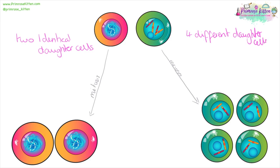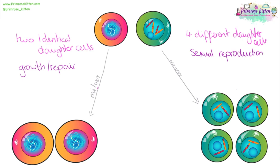You can remember that mitosis goes to two because it has a T in it. Mitosis is used for things like growth or repair, whereas meiosis is used for sexual reproduction, so these cells are going to be gametes. In mitosis we end up with diploid cells, and in meiosis we end up with haploid cells — haploid cells having half the number of DNA as the original cell.